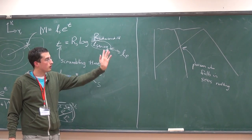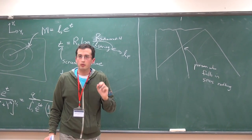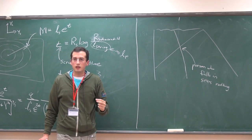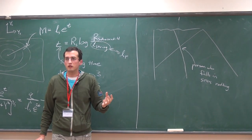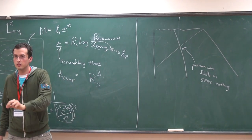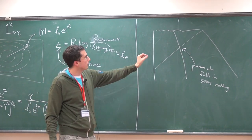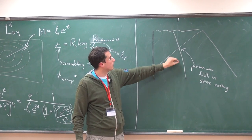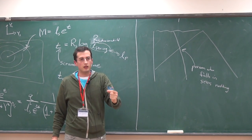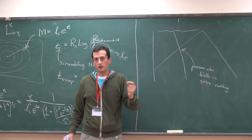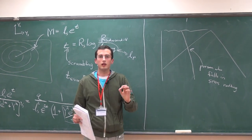But someone who actually falls in just passes through and doesn't see anything. This sounds like a conflict, but the principle of complementarity says there is no experiment which can verify that there actually is a conflict. Every attempt to detect a contradiction between what the falling observer experiences — no membrane — and the outside observer who sees the membrane, will invariably involve Planck scale physics that you can't understand. So it's not something you can analyze with an effective field theory. That's what complementarity is saying.